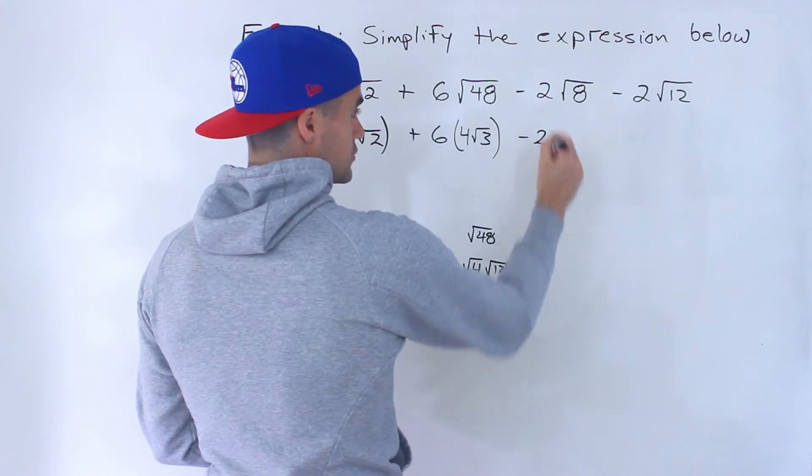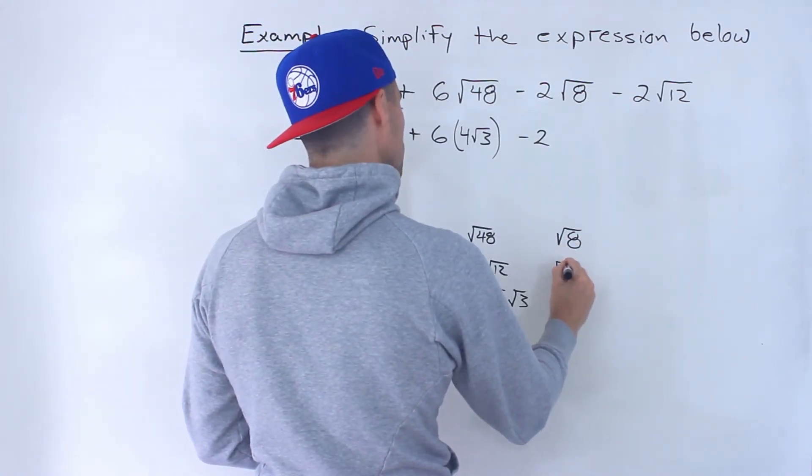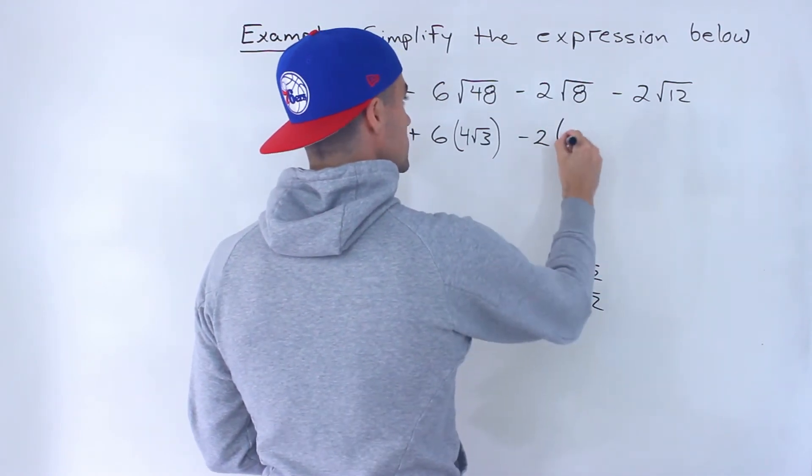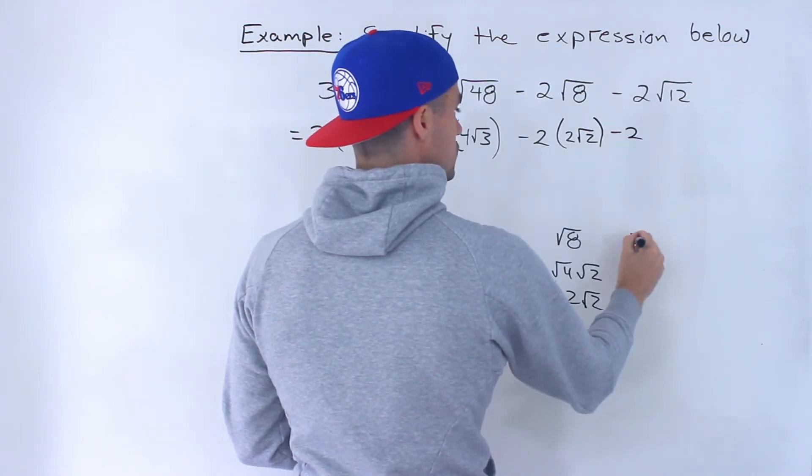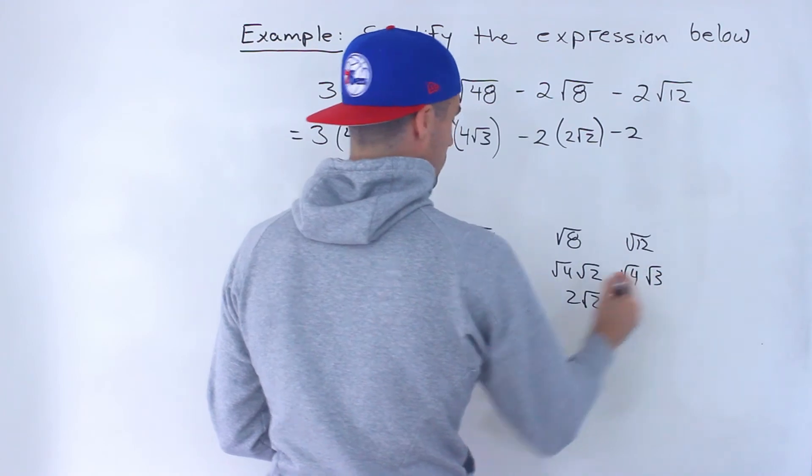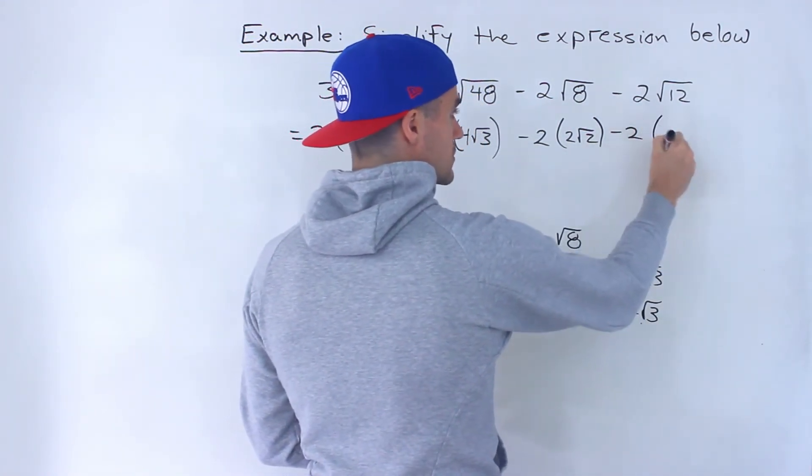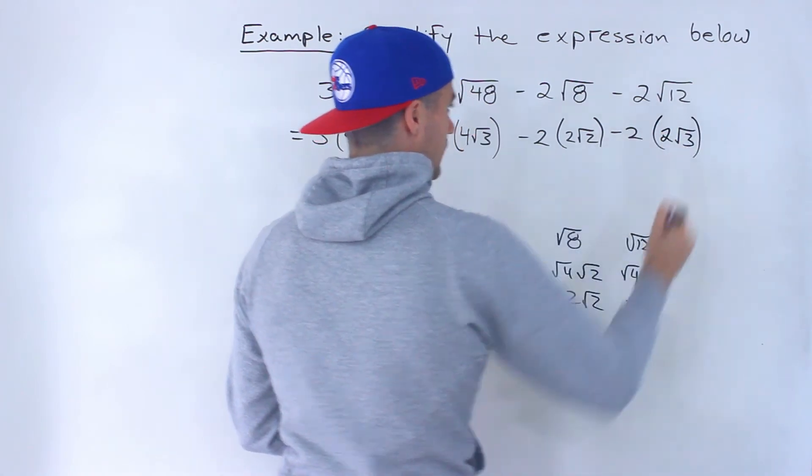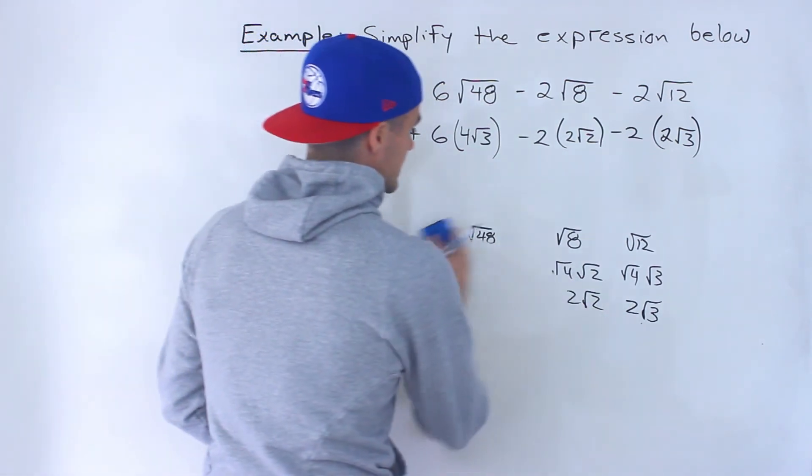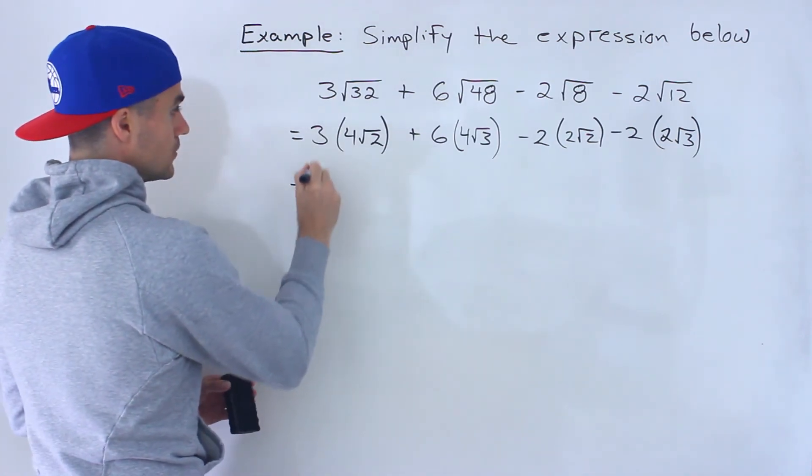And then we'll have minus 2 root 8. Now root 8 simplifies to root 4 times root 2, which is 2 root 2. And then root 12 simplifies to root 4 times root 3. We have that over here as well. So 2 root 3, root 12, those are the same thing. And the reason why you want to simplify these like this is because then you could potentially end up with like terms.